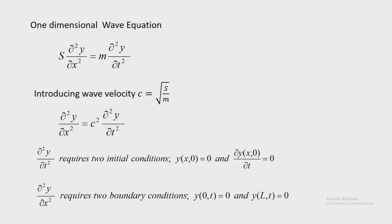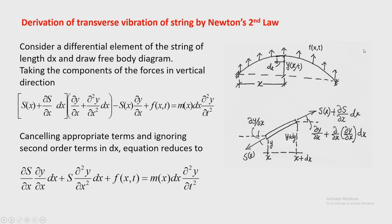The wave equation ∂²y/∂t² = C² · ∂²y/∂x² requires two initial conditions. At the ends of the string, the displacement is 0 and the velocity is also 0 — these are the two initial conditions required. It also requires two boundary conditions. If the string is fixed at both ends, the transverse displacement at the two ends is 0.